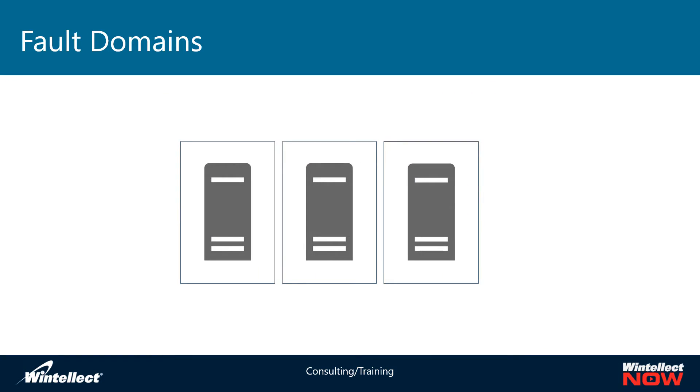When you create an availability set, you assign your virtual machines to it, and that availability set has several fault domains assigned to it. A fault domain is essentially a rack in a Microsoft data center that has independent networking and independent power from all other racks or fault domains. Microsoft will take the virtual machines in your availability set and distribute them across more than one fault domain, so that in the event of a rack failing it doesn't bring down your entire application. Your master node and worker nodes end up distributed as evenly as possible across the fault domains that are part of your availability set.